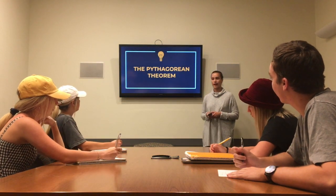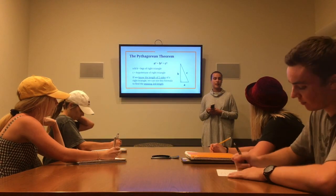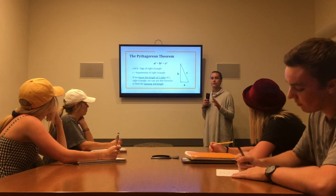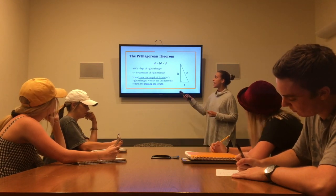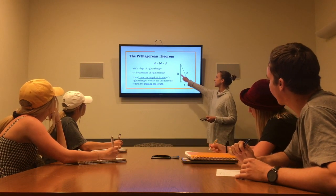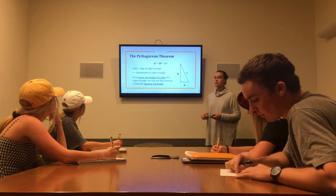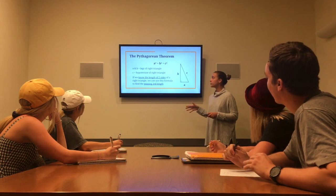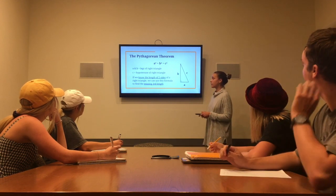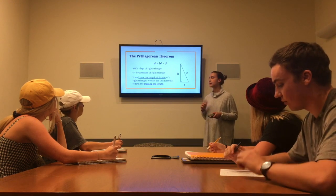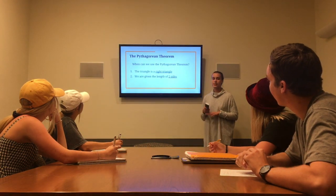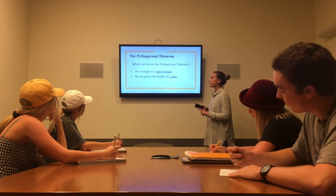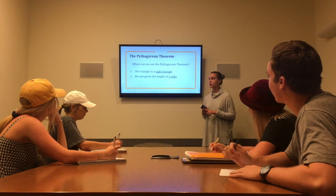Next we're going to cover the Pythagorean theorem. The Pythagorean theorem is a formula that describes the relationship between the three sides of a triangle — more specifically, the three different lengths of a triangle. A and B represent the legs of the right triangle, which are the two sides that come out from the right angle, and C represents the hypotenuse. This formula is so useful because if we know any two sides of a right triangle, we can use the formula to find the missing third length. But we can't use this in just any situation — first, the triangle must be a right triangle, and next we must be given two sides.